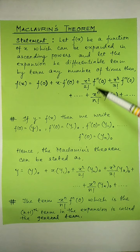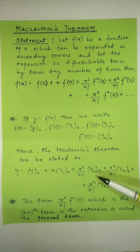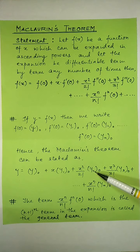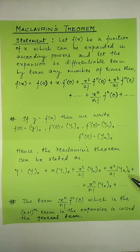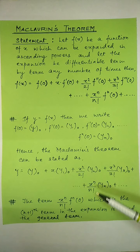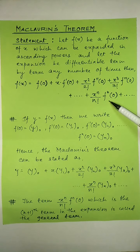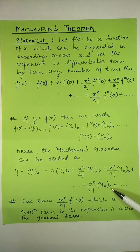Then we have x squared upon 2 factorial into f double dash of 0, which can be written as y suffix 2 — the second order derivative of f of x when x is 0. We have then x cubed upon 3 factorial; this f triple dash of 0 can be written as y suffix 3, the third order derivative of f of x when x is 0. And this can be written further as x raise to n upon n factorial into y suffix n when x is 0.